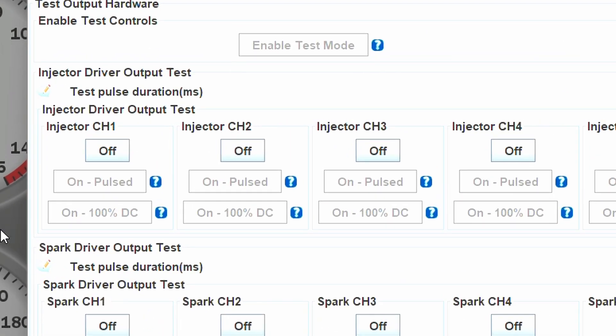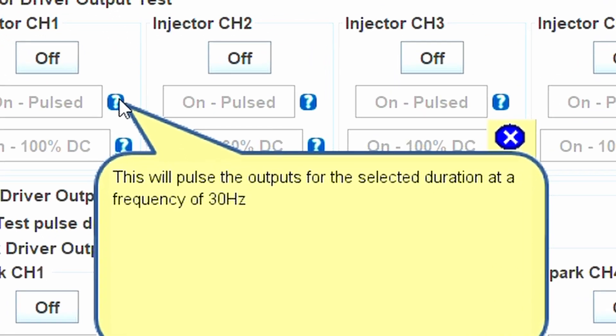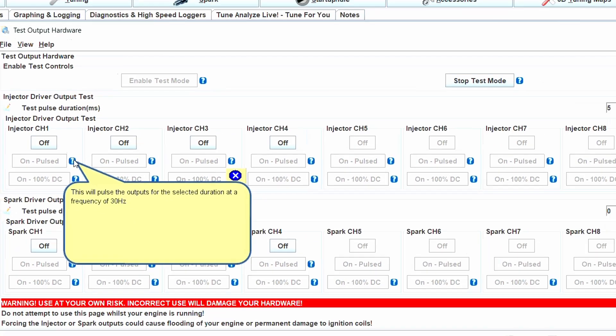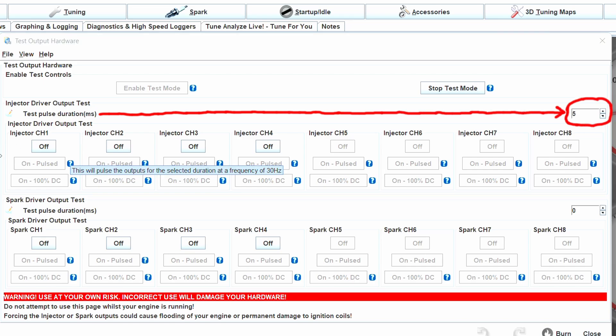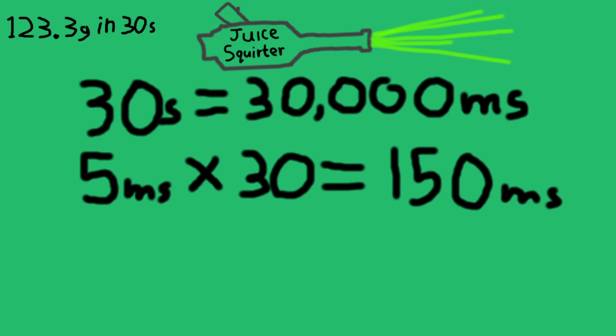In the Tuner Studio hardware test, you will see there is an on pulsed function for the injectors. If you click this little question mark, you'll see that this will turn the injector on at a frequency of 30 hertz, so 30 pulses per second. I have my pulse width here set to 5 milliseconds. 5 milliseconds times our 30 hertz gives us 150 milliseconds. So that's 150 milliseconds per second that the injector is theoretically open for.